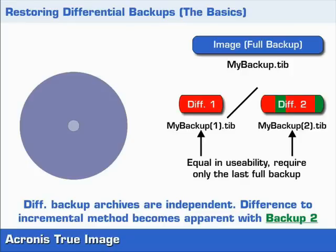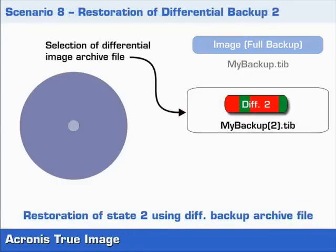In comparison to an incremental backup, the Differential method places the same value on any archive files that have been generated since the full backup. This is based on the fact that it always uses the last full backup as its basis. So the difference between the two backup methods only comes into effect after the second backup session. The following scenario illustrates this a little better.